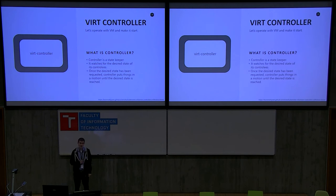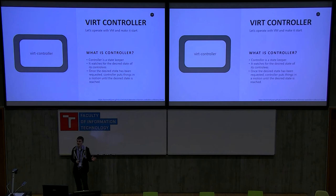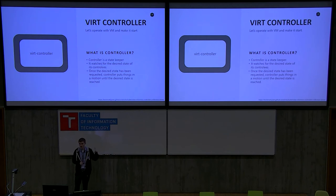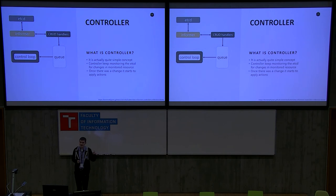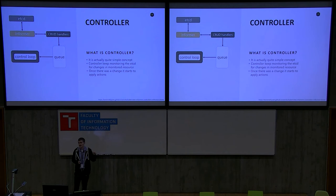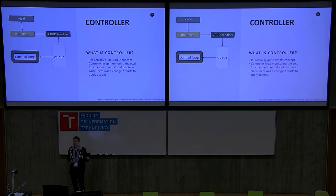What is a controller? For me, a controller is a state keeper. It watches state in a store, monitors for state, and if the desired state is not reached, it pulls the strings and pushes the levers to make that state happen — eventually, not instantaneously. It's actually a simple concept: you watch etcd with an informer, you register your create, read, update, and delete endpoints. Once events are received, you do your validation or whatever you need, then place an item in the queue. There is a control loop — basically an event handler — that takes items out of the queue and works on them.